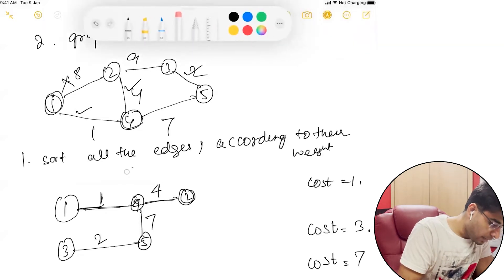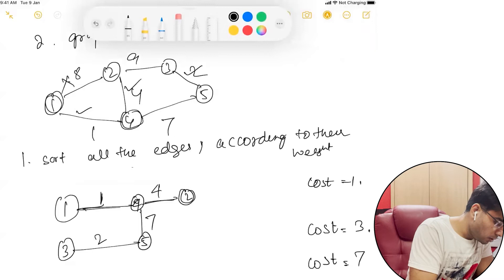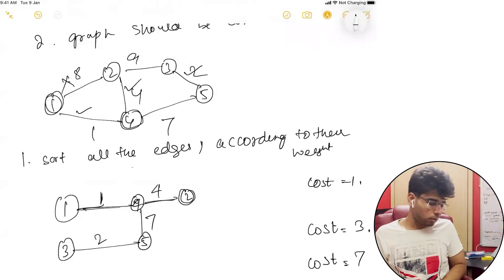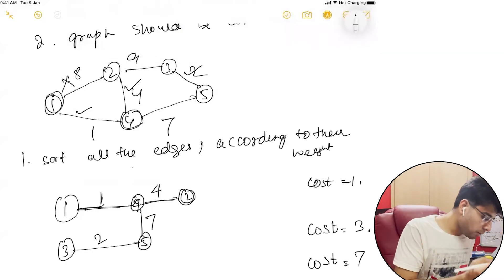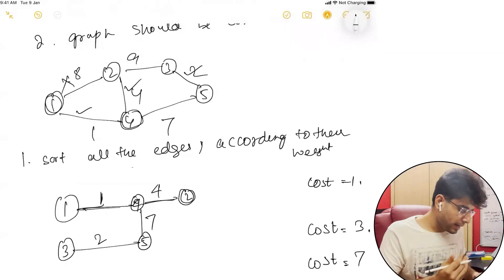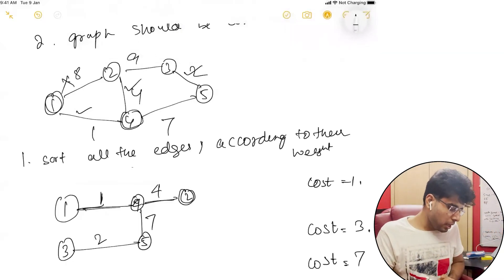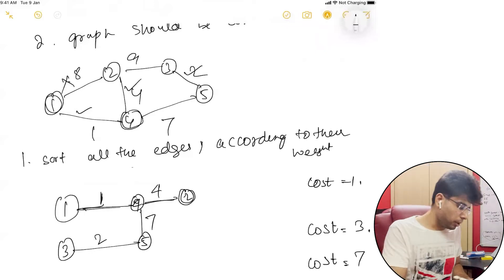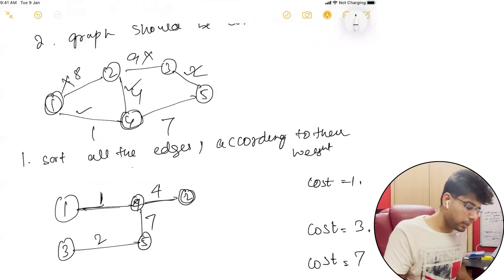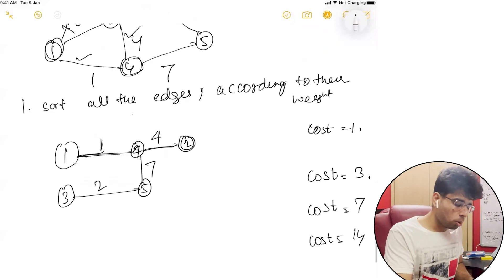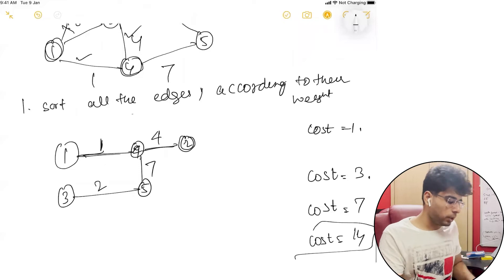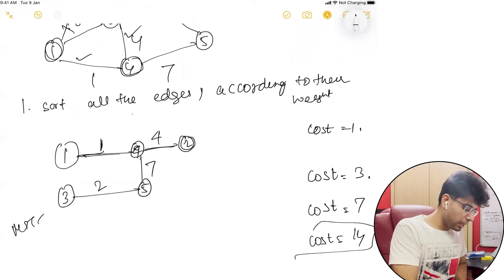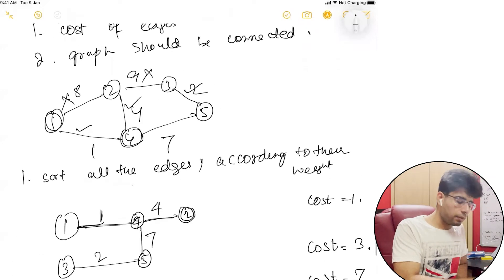That's why we won't take this edge because at the end of the day, everything is already connected. Next is 2 and 3 — we also see that 2 and 3 are connected, they are in the same connected component. Therefore, we also discard that edge, and the total cost comes out as 14. This is the minimum spanning tree for this given graph.